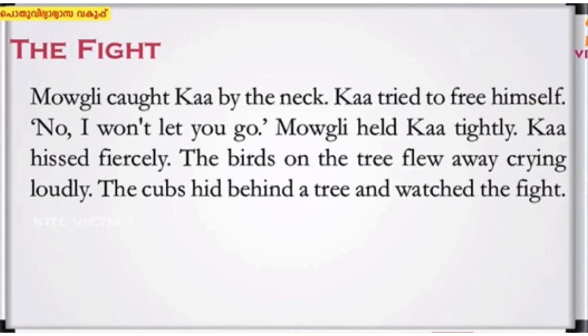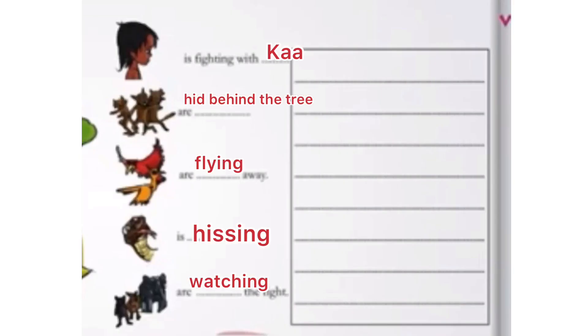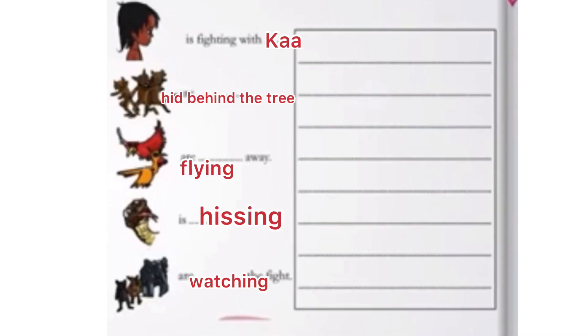Next activity: Mowgli is fighting with Ka. Can you describe the scene? Some hints are given below. First one: Mowgli is fighting with Ka. Cubs are hiding behind the tree.